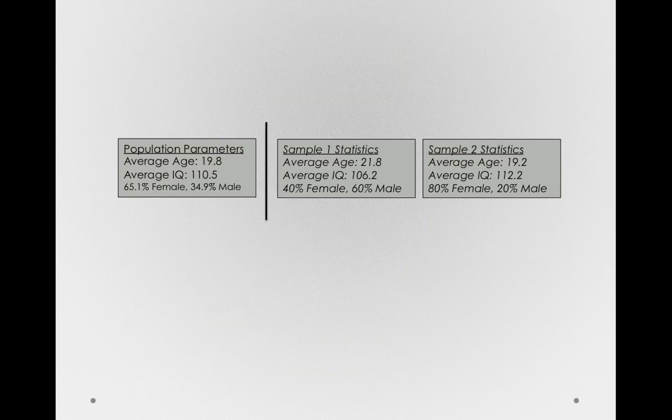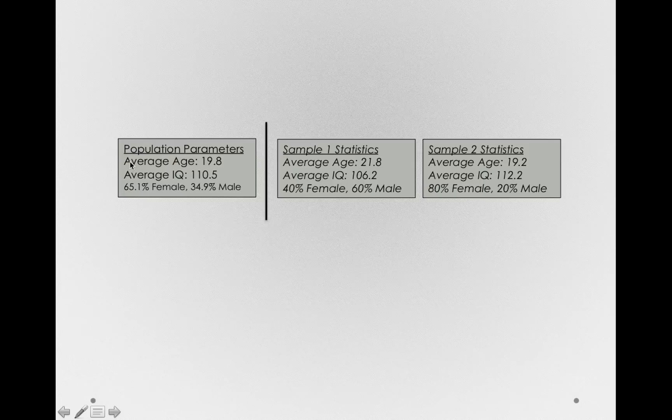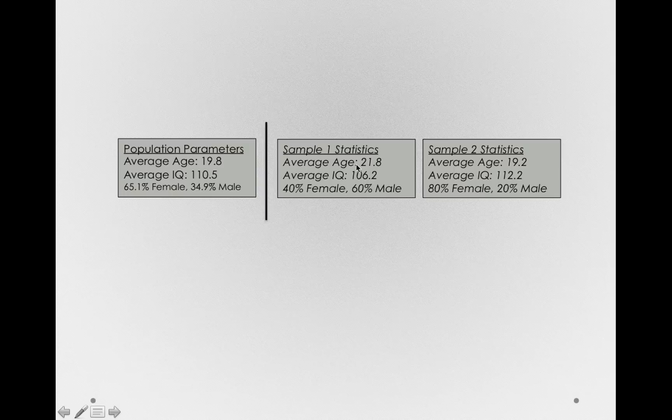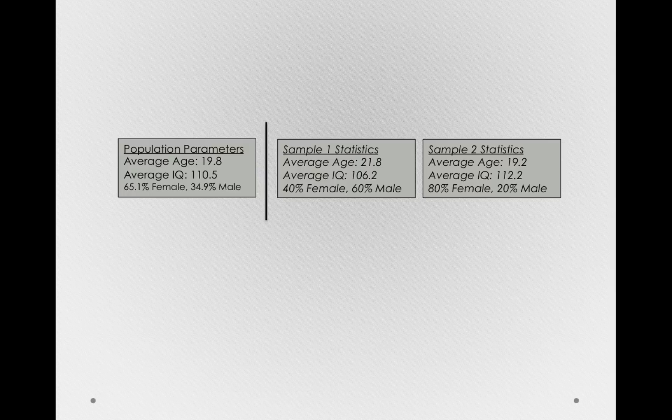Now let me take the population parameters and sample statistics and put them side by side. And I want you to notice the differences between the parameters in the population and the statistics in our sample. Notice in terms of age, the population was, in truth, having an average age of 19.8. In sample one, we got 21.8 as our average, and in sample two, 19.2. Neither were the same as the population, and each sample didn't even agree with each other.